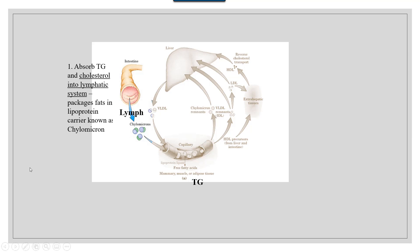It will travel through the lymphatic system until it is dumped into the blood. The chylomicron will then carry fats to cells so that they can grab whatever triglycerides they need.